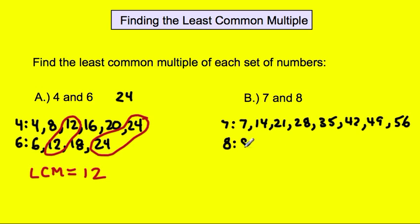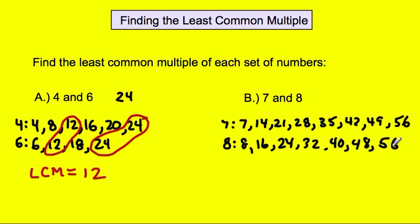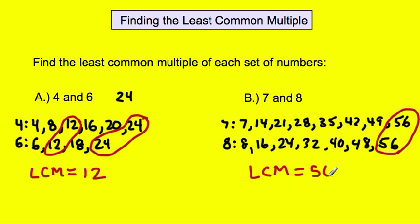For the 8, we have 8, 16, 24, 32. Any multiples that are common yet? No. So let's continue: 40, 48, and 56. Now checking our lists to see if we have any common multiples, and we do — it's 56. So the least common multiple of 7 and 8 equals 56.